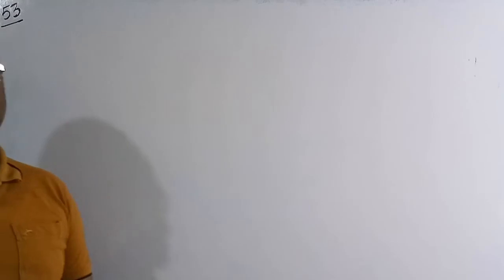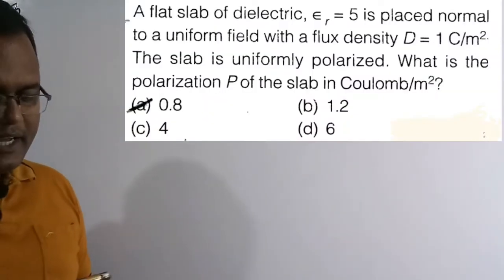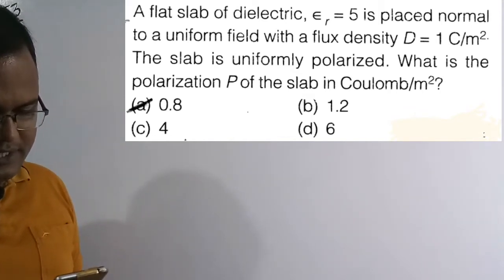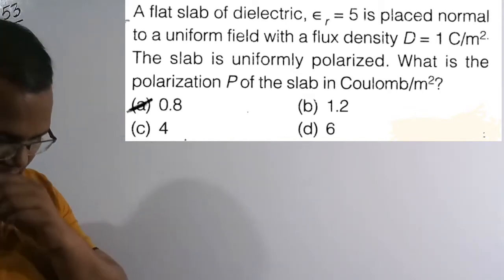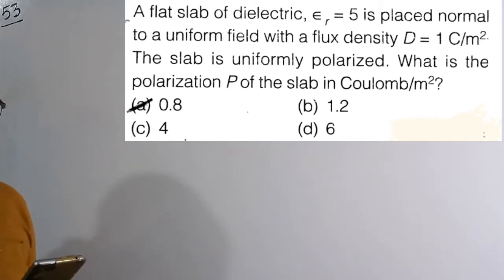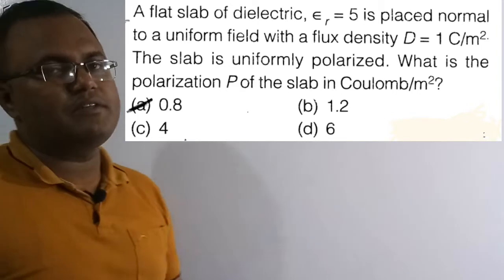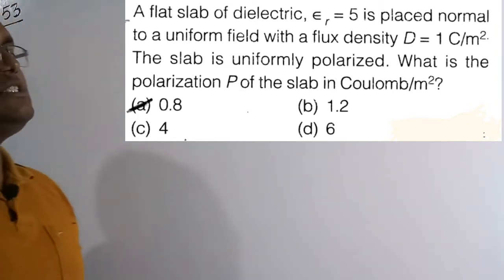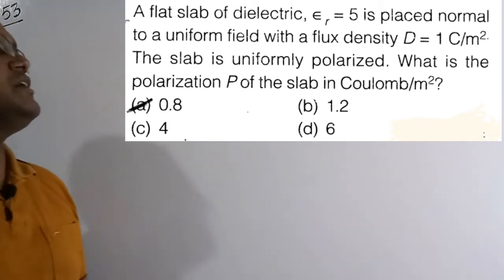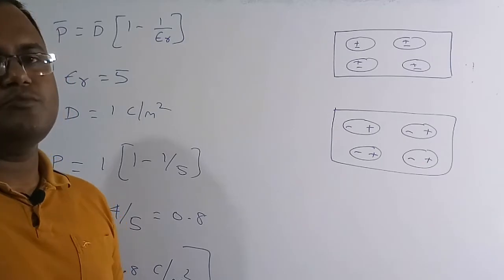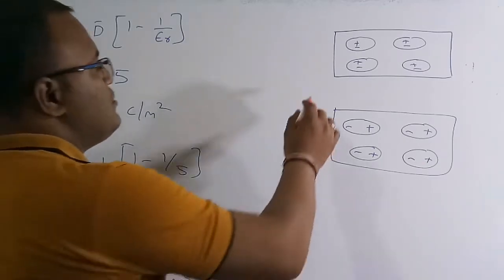Now we solve the 53rd question. A flat slab of dielectric with epsilon_r equals 5 is placed normal to a uniform field with flux density D equals 1 C/m². The slab is uniformly polarized. What is the polarization P of the slab in coulombs per meter squared? Option A, 0.8 C/m², is the correct solution.